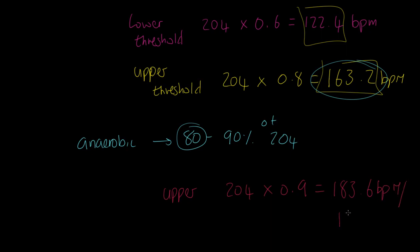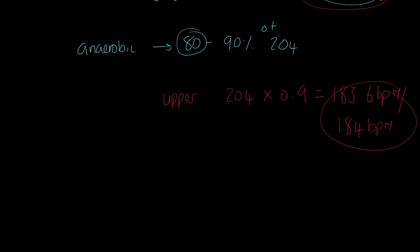So we could either say 183.6 beats per minute, or of course you could round it up and say 184 beats per minute. In other words, to work anaerobically we need work between this value and this value. Now before we finish this off, I just want to bring one other factor into play.